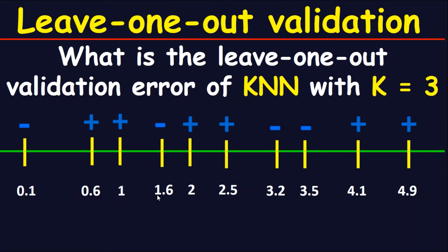Now move to 1.6. Look at the closest three points to 1.6 — this point, this point, and this point. The signs are: positive, positive, positive. The majority of signs is positive. However, the original point is negative, so this is an error.